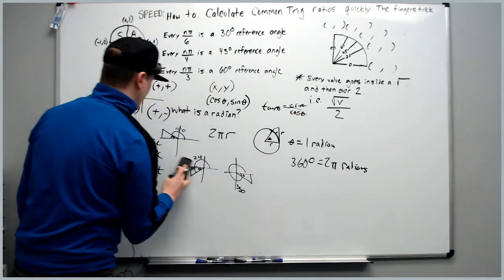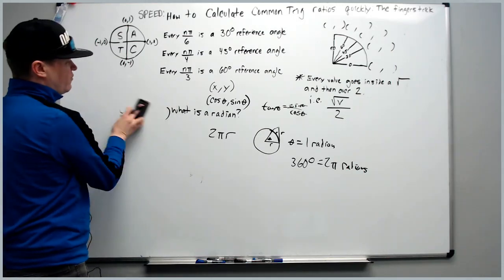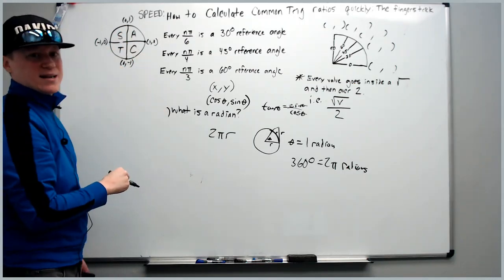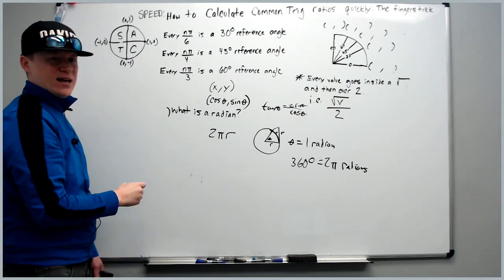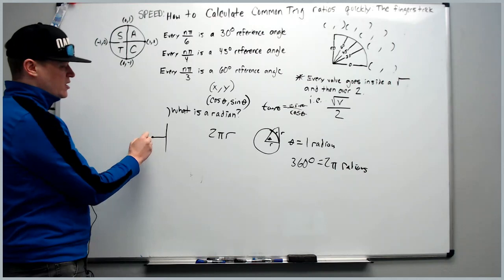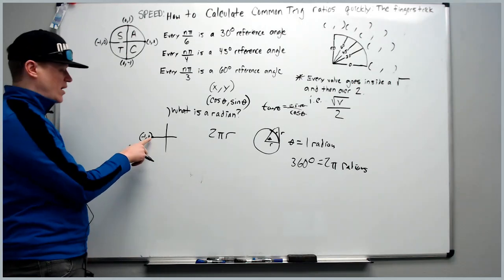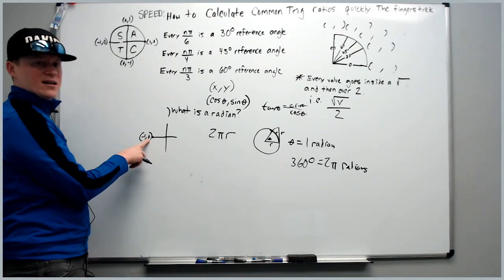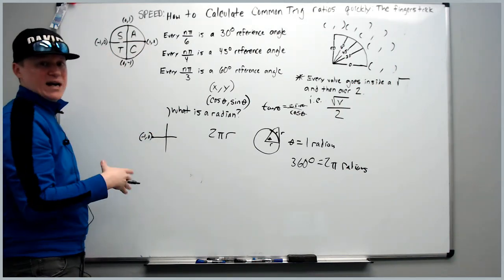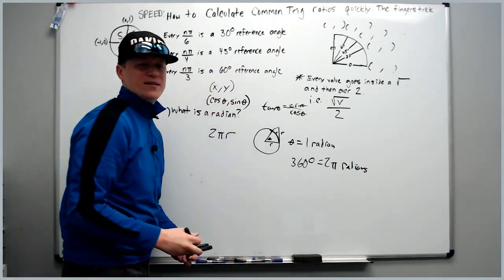We won't use the fingers trick for quadrantal angles — those lying on the x or y axis. Instead, just draw a quick coordinate plane and use the ordered pairs. For example, cosine of π: the point is (−1, 0), so cosine of π is −1 and sine of π is 0. Just use the ordered pairs you'd find on a unit circle at the quadrantal values.